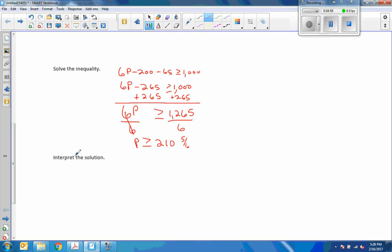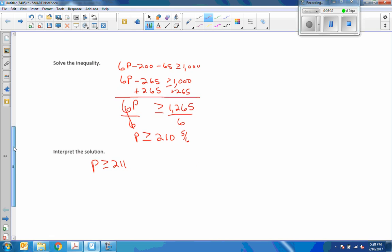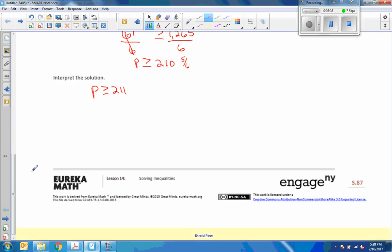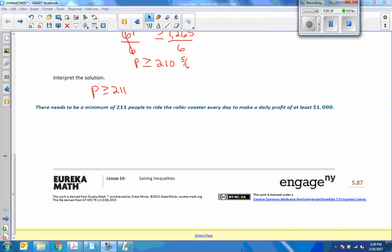Interpret the solution. You cannot get 210 and 5 sixths of a ride. You're not going to let someone get on that ride and ride it five out of six hundred meters if that's length of the ride and stop it and tell them to get off because they only paid five, six to ride. That's ridiculous. So you need to round. So that means that the number of tickets has to be greater than or equal to 210 wouldn't be enough. So here's the interpretation. There needs to be a minimum of 211 people to ride the roller coaster every day to make a daily profit of at least one thousand.